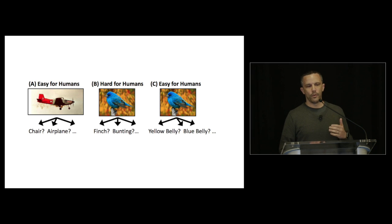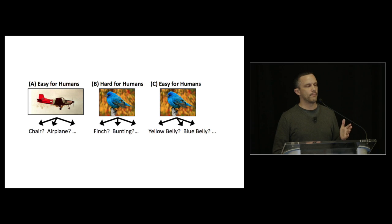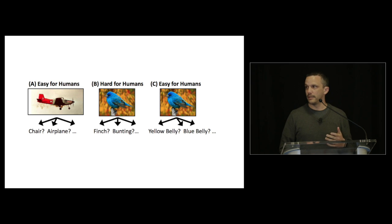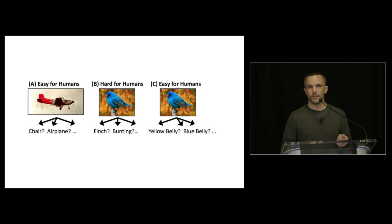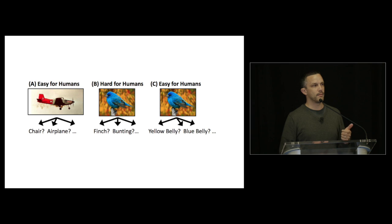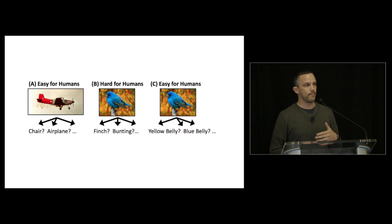If you look at the basic-level category task, just knowing that something is an airplane — not a chair — is very simple. A lot of the visible research going on in deep learning is operating at that basic category level. But knowing whether something is an indigo bunting or a finch is hard unless you're an expert in ornithology. However, if you break it down into simple questions — is the belly blue? is the beak black? — in a field guide fashion, then it becomes easy for humans.